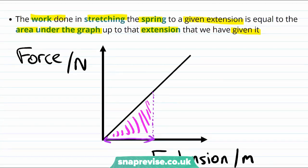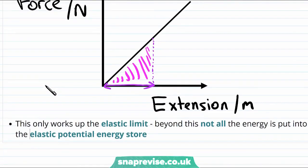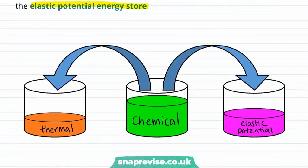Now remember that formula that we had for calculating elastic potential energy worked up until the limit of proportionality. Well this method works slightly further. It works up until the elastic limit. But it does only work up until this elastic limit. Beyond that not all of the energy is put into the elastic potential energy store. For example some of the energy will go into the thermal energy stores.